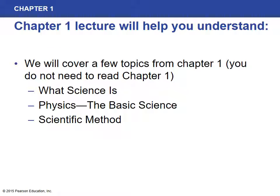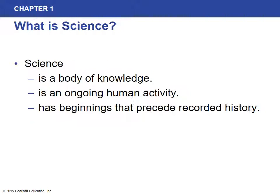The topics we'll cover from chapter 1 include what science is, why physics, what physics is and why it's considered the basic science, and the steps of the scientific method. Science is a body of knowledge — an ongoing human activity with beginnings that precede recorded history. It is essentially a way of looking at things and trying to systematically, step-by-step, obtain information about the things we are studying.